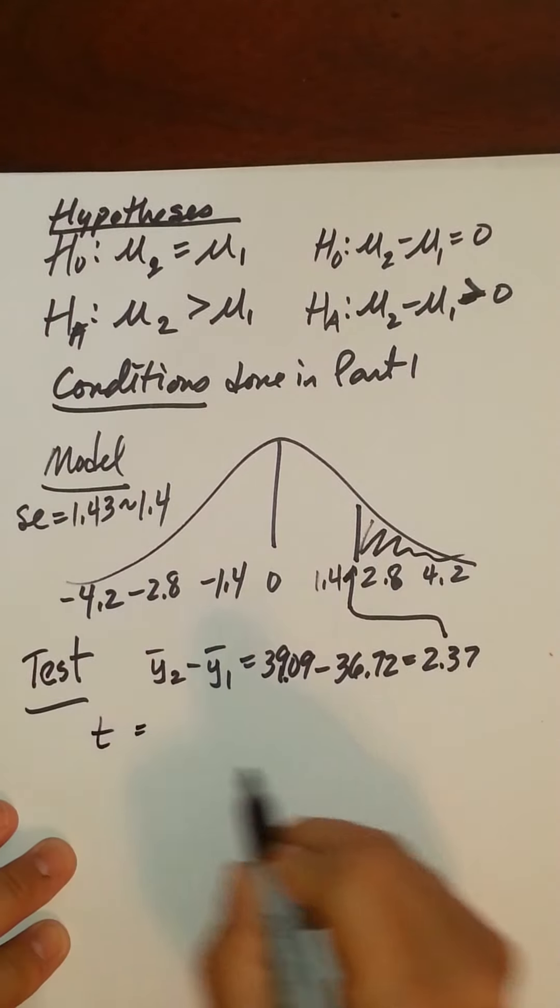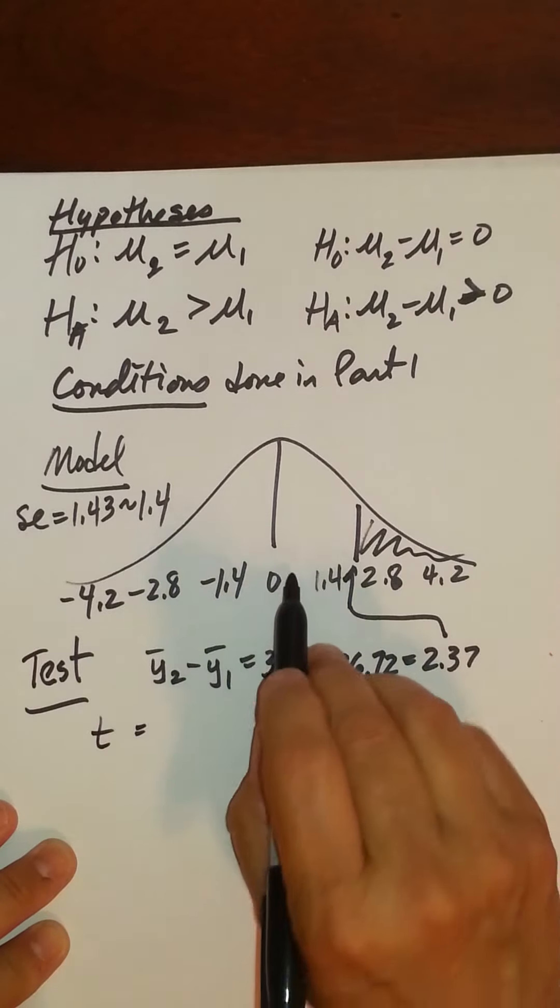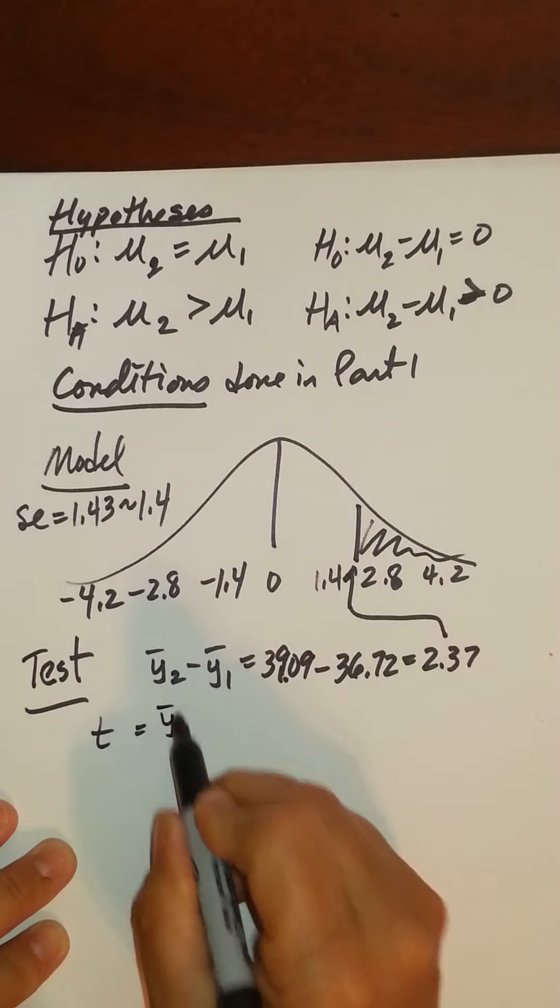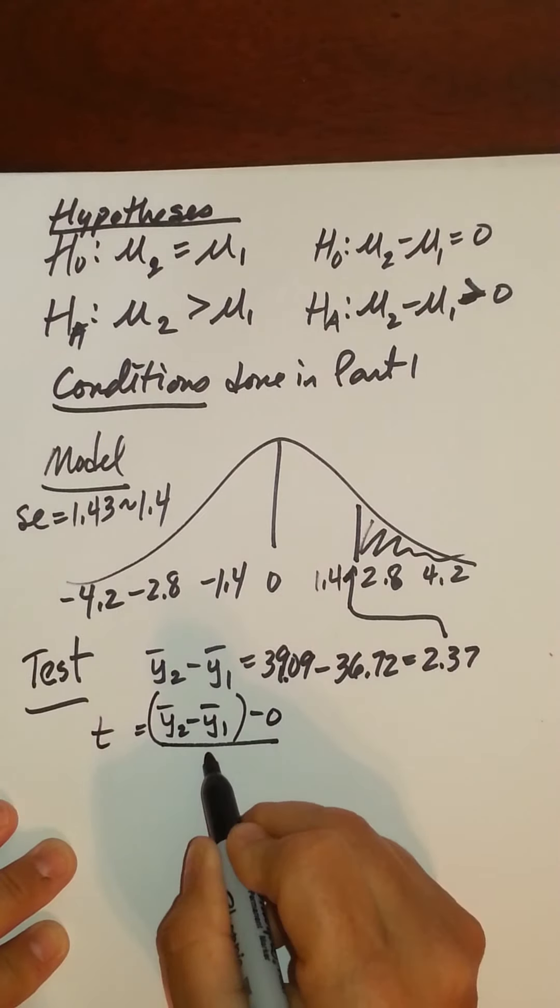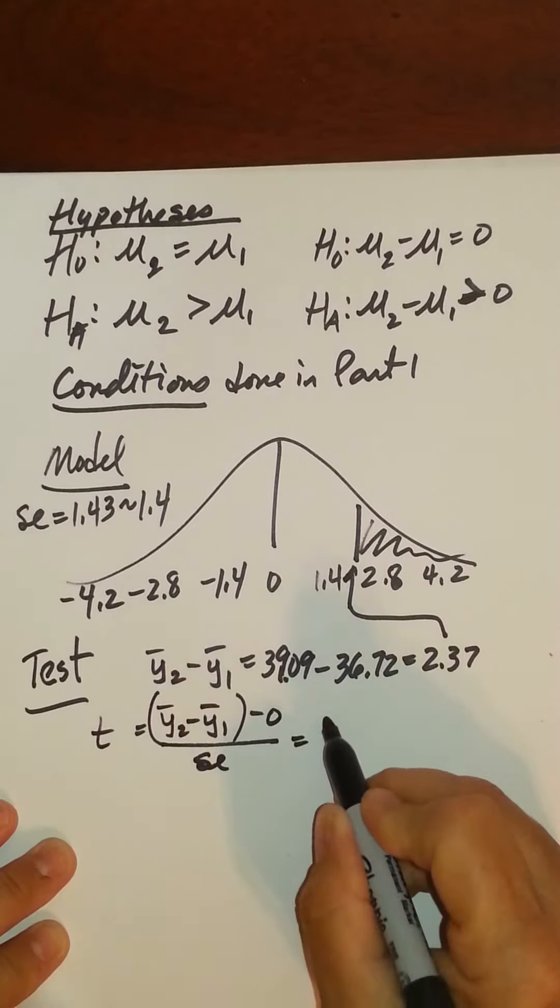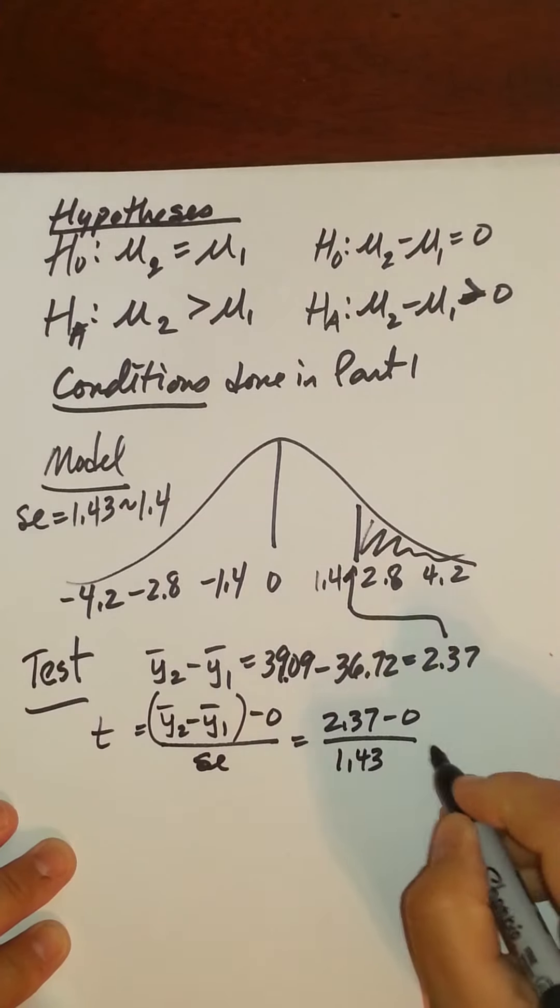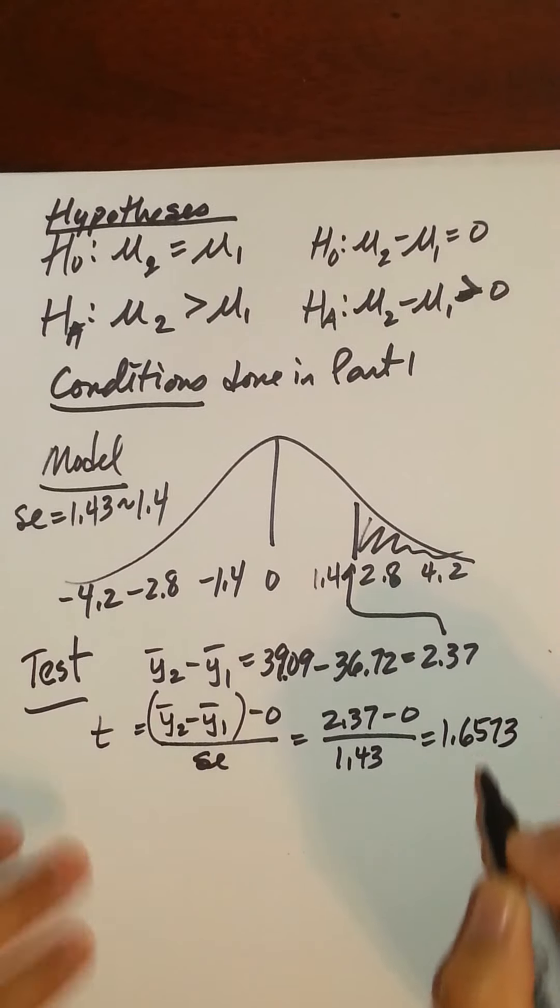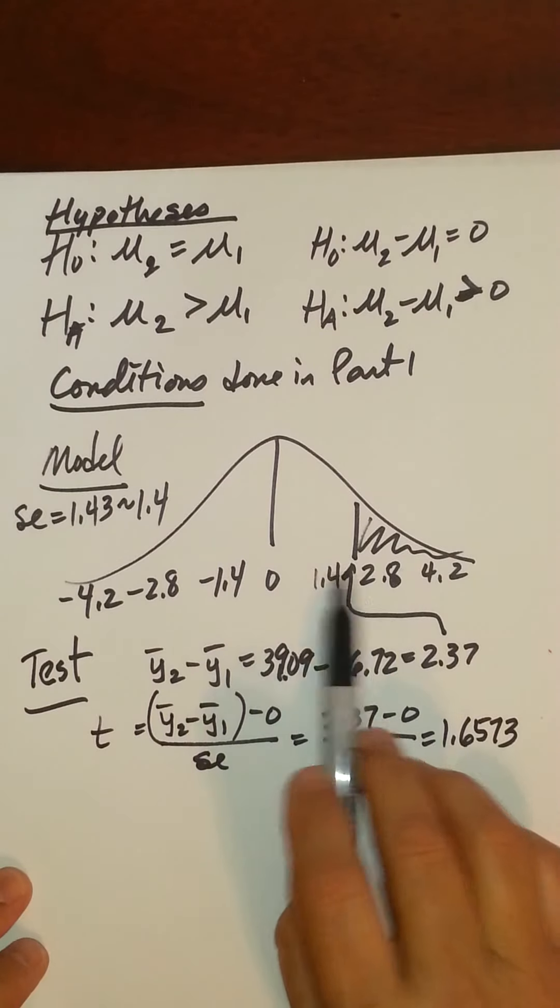Now I go ahead and set up the t-score. How far is this sample difference, y bar 2 minus y bar 1, from the mean 0? So how far is this sample difference from the mean standardized? So I'd have 2.37 minus 0 over 1.43. And I get 1.6573 standard errors. That looks about right. Here's one standard error. Here's two. About right.